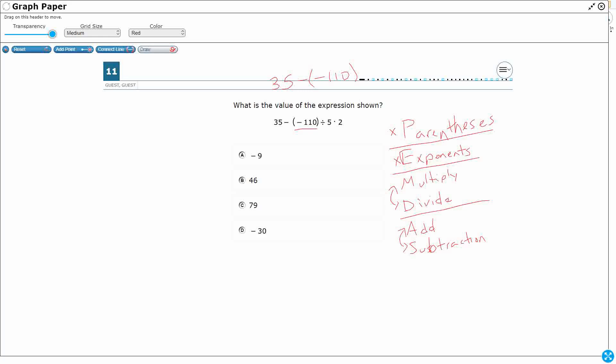So what do we have here? We've got a minus, so we're going to kind of do that last. We do have a division. So what are we dividing? The number right next to it. So really we just need to divide 110 divided by 5.